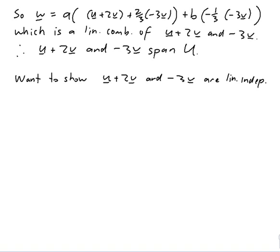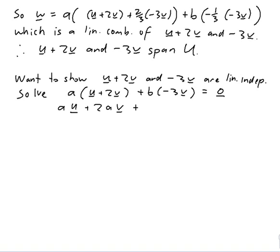So I want to solve an equation like this: solve a of u plus 2v plus b of minus 3v equals the zero vector. Well all I can think to do with that equation is expand it out. So au plus 2av, well actually I suppose it would be minus 3b v equals zero. Now it looks like I've got a combination of u and v, so au plus 2a minus 3b v equals zero.